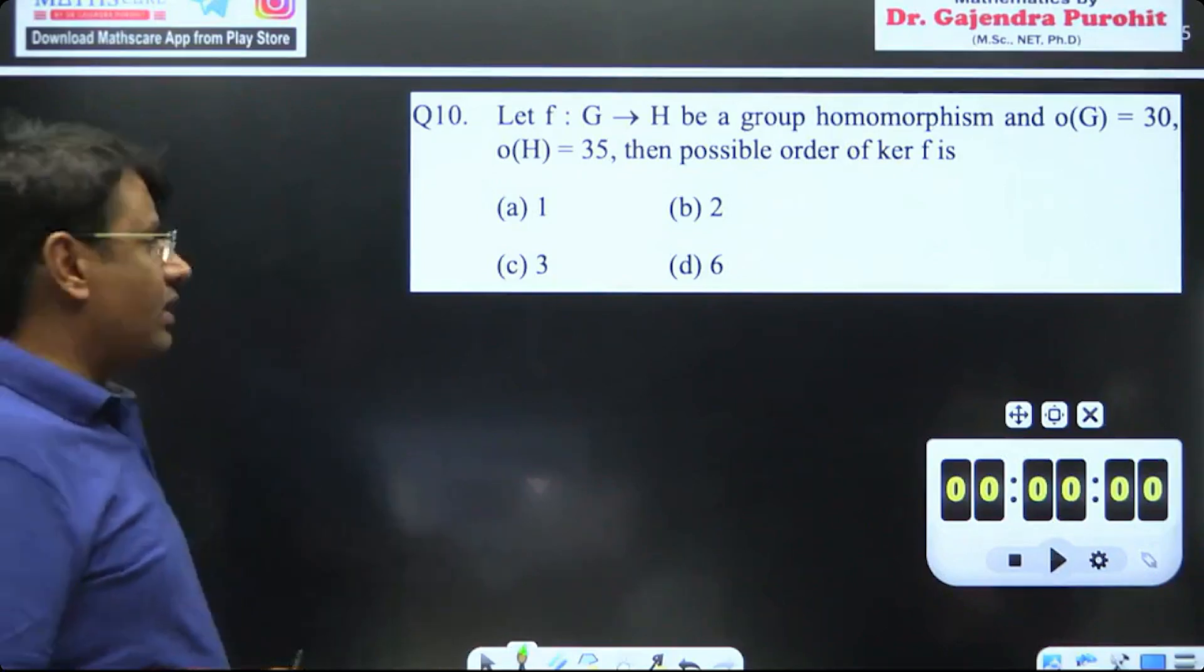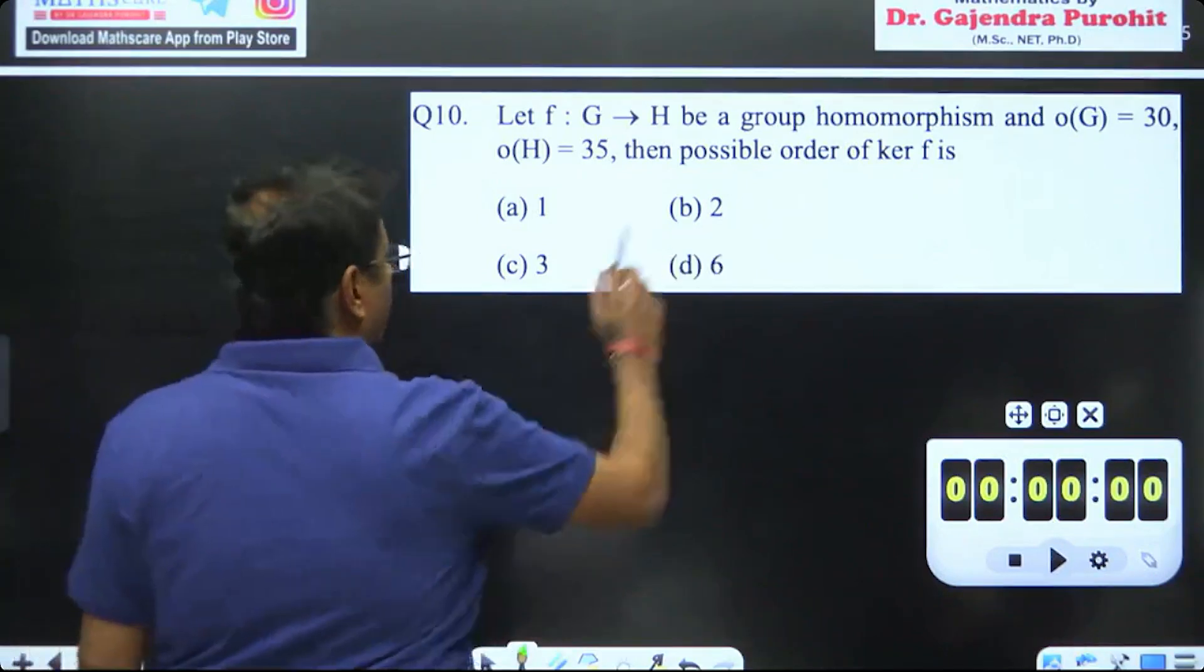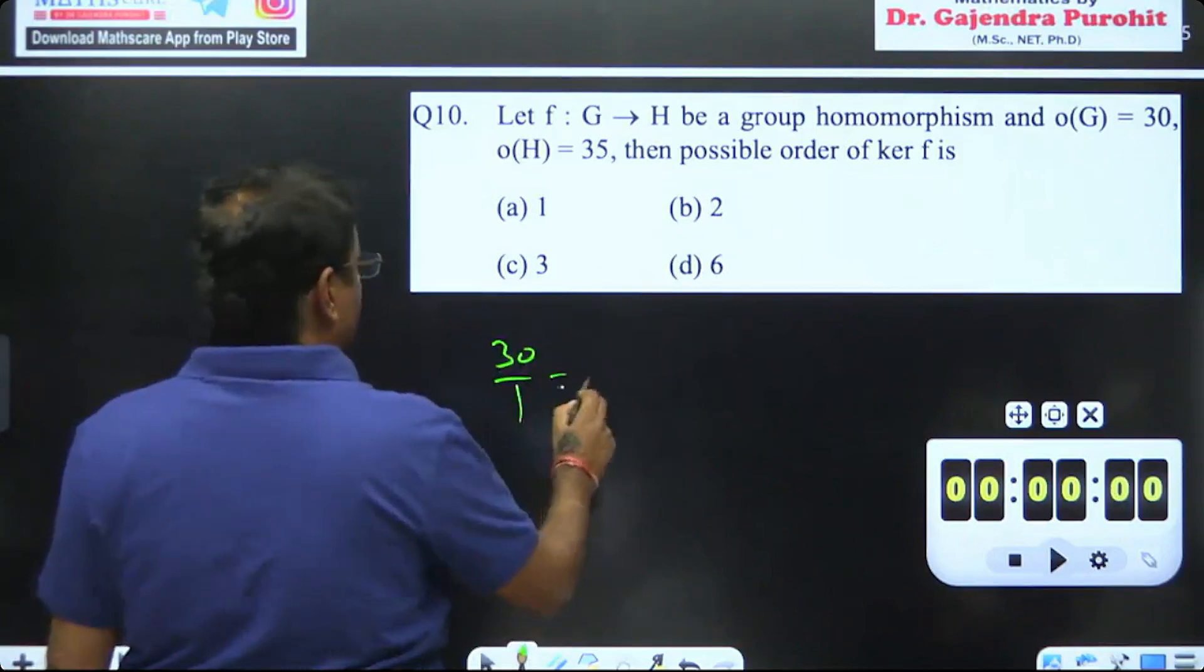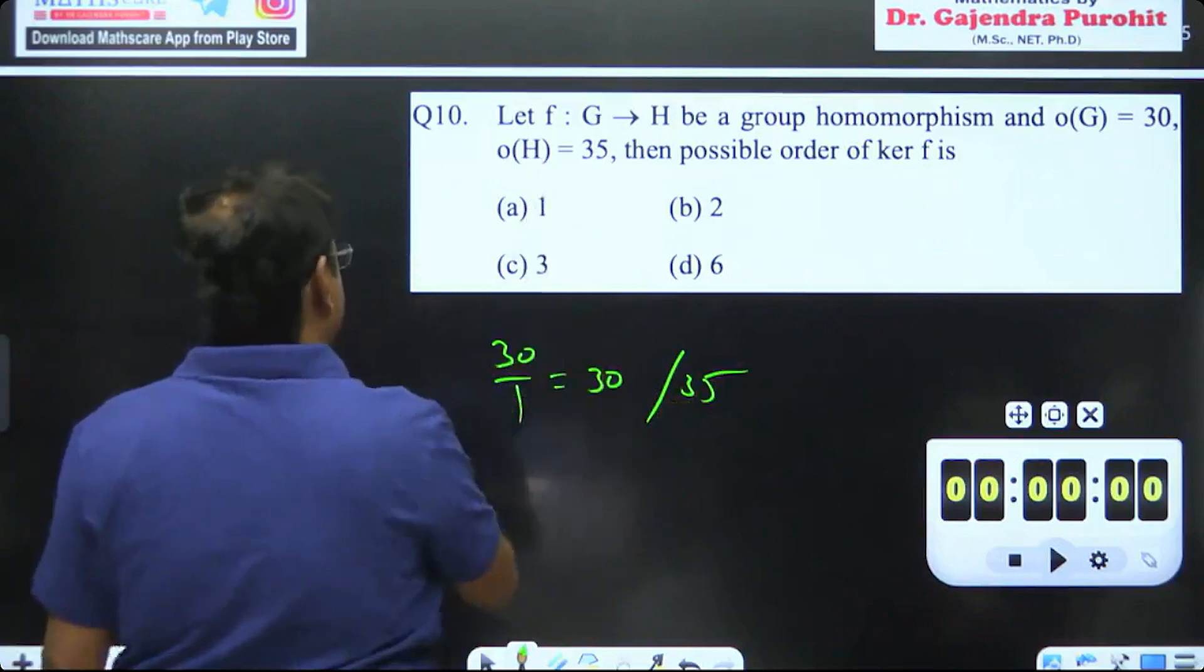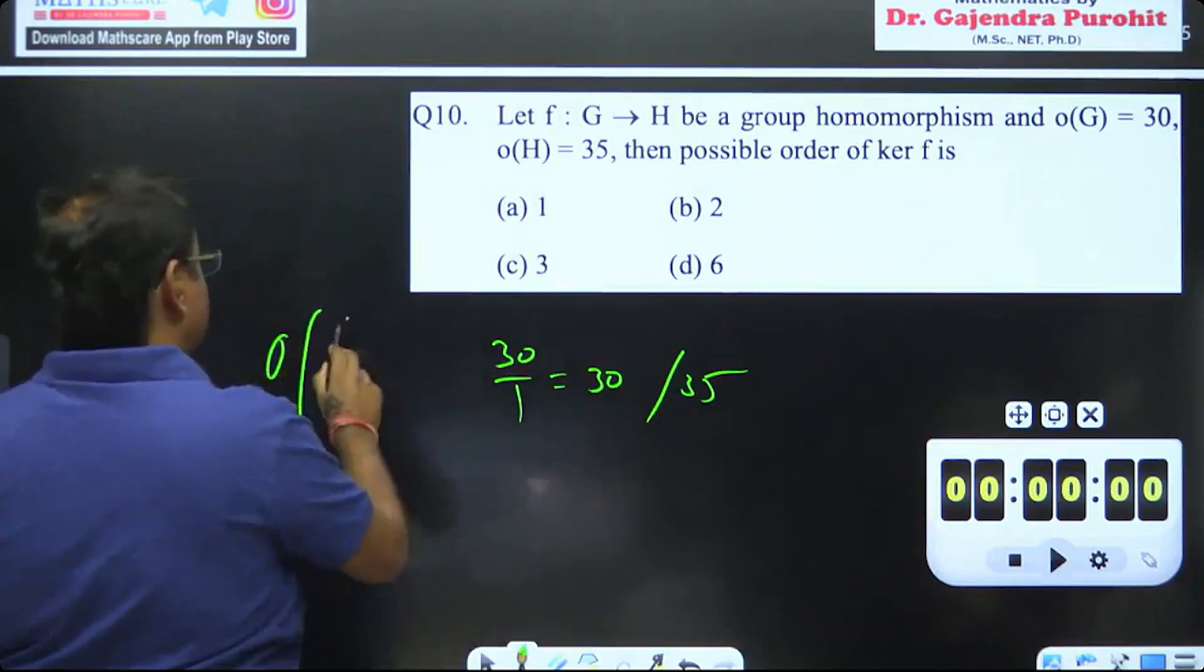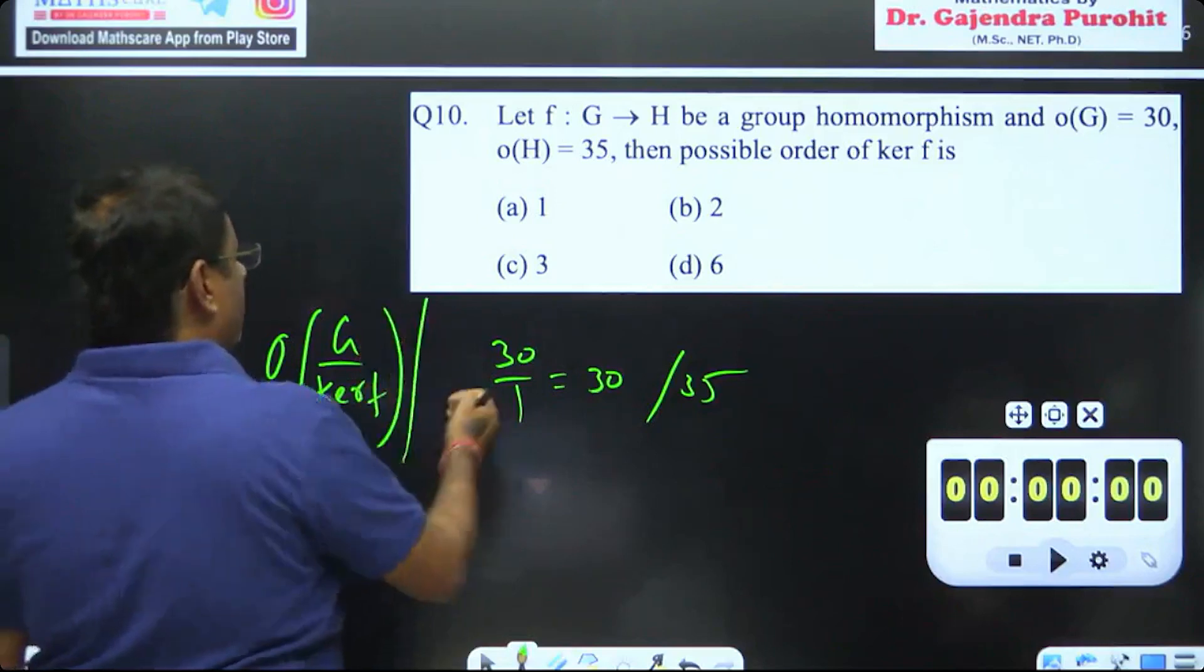So we know that if we have a kernel order here, if we divide 30 by 1, we can divide. So we have 30 and 35. The order of G divided by kernel f must divide the order of H.